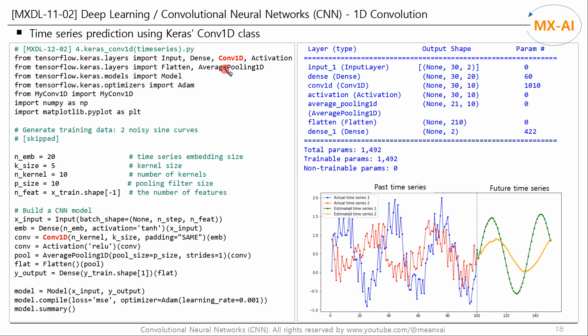Next, let's predict a time series using Keras' 1D convolution class. We create a 1D CNN model with parameters identical to those of the previous code. The past time series and predicted future time series results are similar to those of the previous custom implementation.